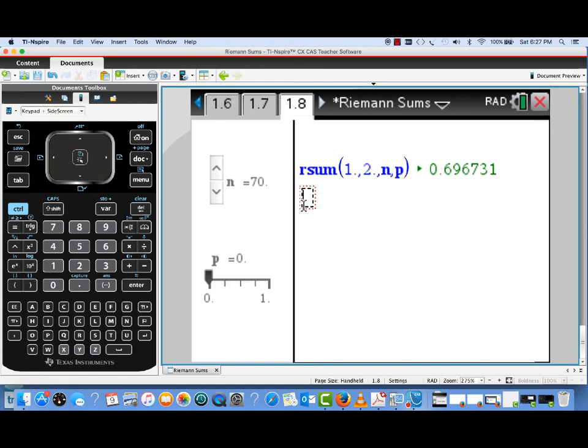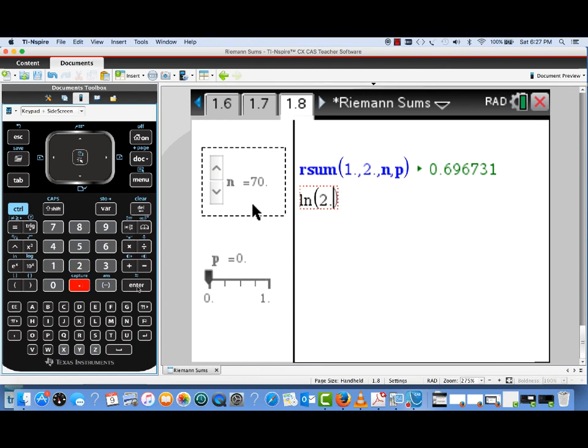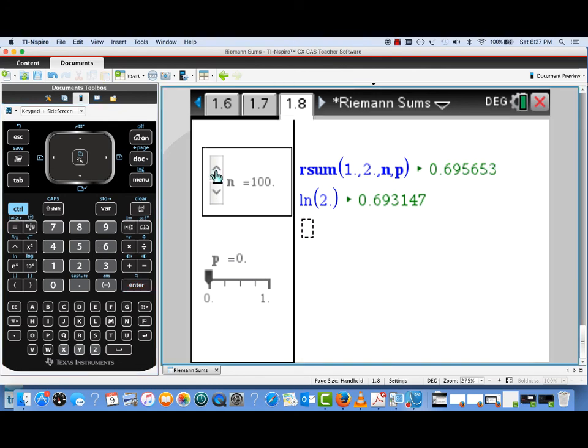Here I'm incrementing the number of sub-intervals up by 10 at a time. Let's take a look at that comparison value again. Remember, we're approximating basically the natural log of 2. So let's get that value where we can see it. You can see what we've got now is with n equals 100 sub-intervals with the left endpoint. There's midpoint very, very close. And if we look at the right endpoint, then we have another value. That's again an underestimate. So these sliders are very nice for helping us explore the values of these Riemann sum approximations.